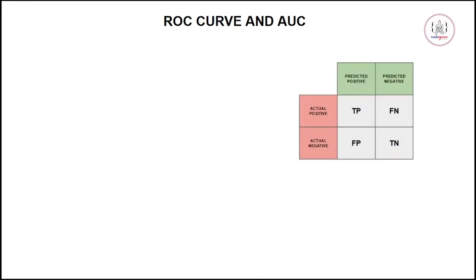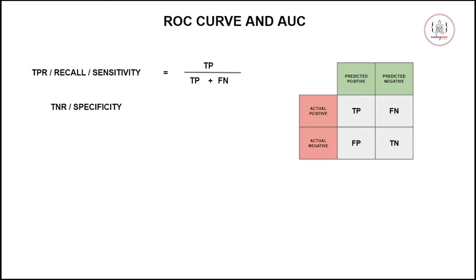Before moving forward, let's see what is true positive rate and false positive rate. Your true positive rate is your recall, also called sensitivity. Recall is: out of all actual positives, how many are you able to identify correctly? The actual positives are true positive plus false negative. Your true positive rate is given by: true positive divided by true positive plus false negative.